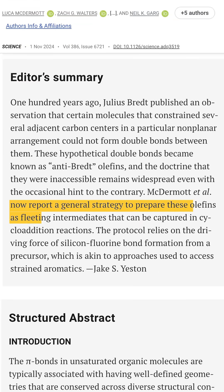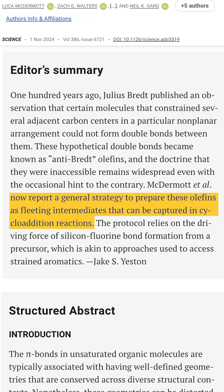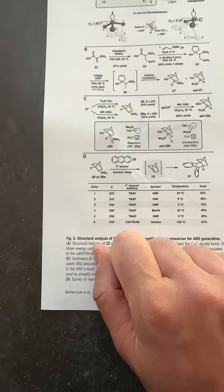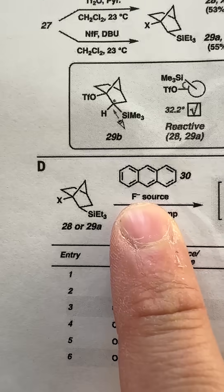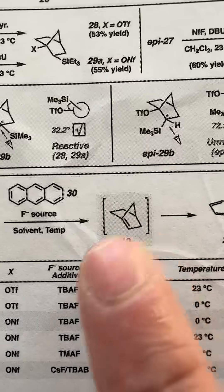on November 1st, chemists from UCLA announced that they had found a way to systematically violate Brett's rule. They started with this, which they reacted with a fluoride source, which convinces these two groups here to leave, very briefly forming the star of the show. Woo!